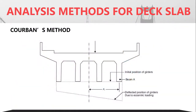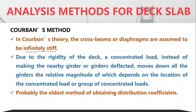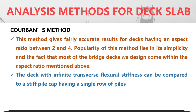The load acting on the deck causes all girders to deflect. Corbon gave the corresponding load carried by each girder depending upon the deflection profile. This method is accurate for decks having an aspect ratio — the L/B ratio — between 2 and 4. Since most bridges fall in this range, this method works very well. The method is developed based on the concept of a stiff pile cap supported on a number of piles — similar to the analysis of a pile cap with a single row of piles.